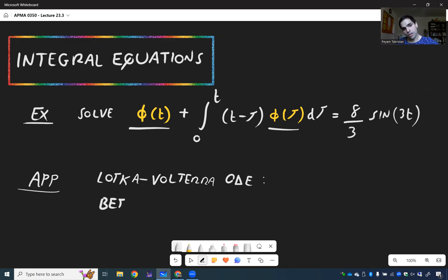So a better population model. Because we did talk about logistic equation and everything for bunnies versus foxes.